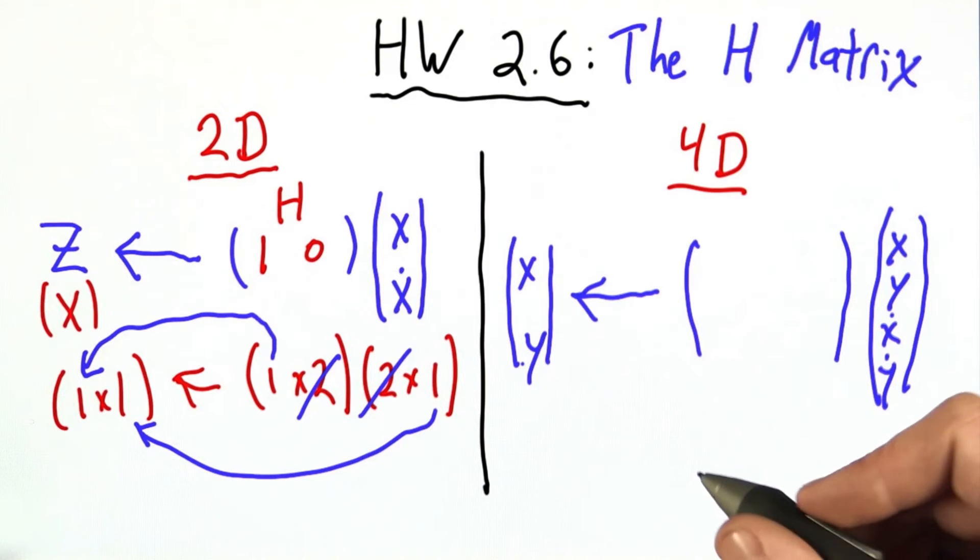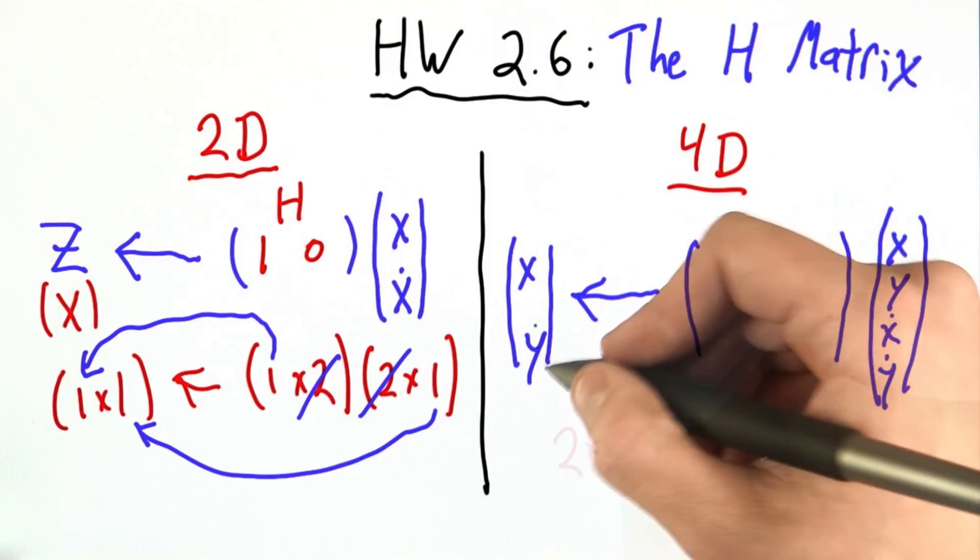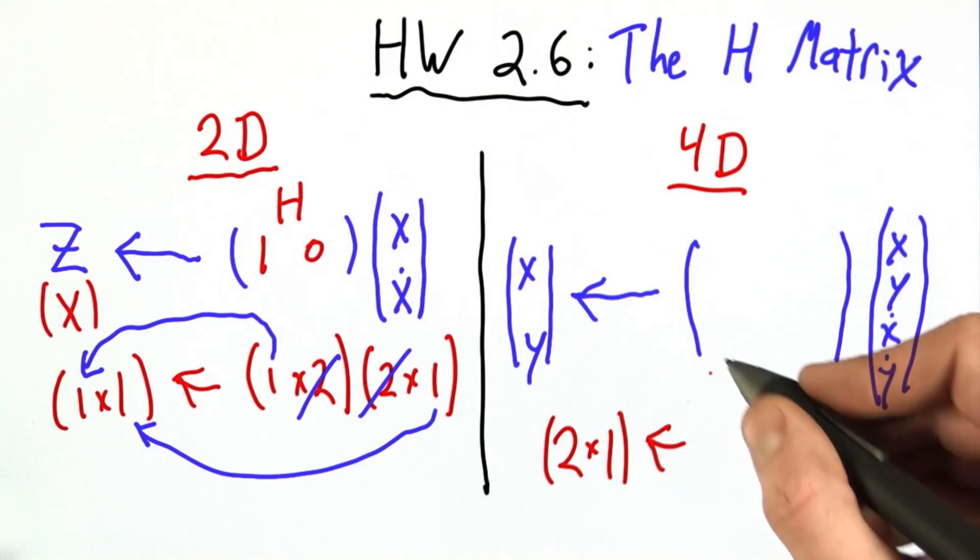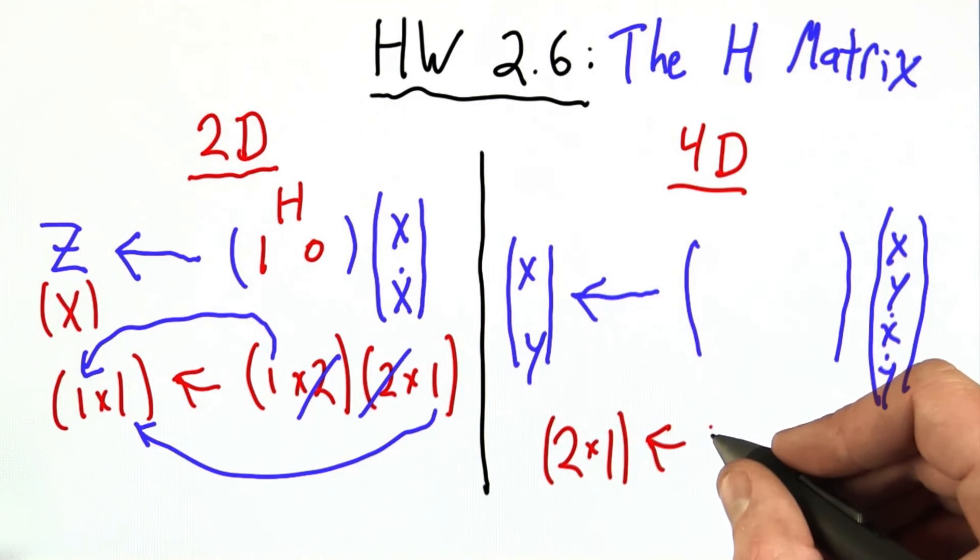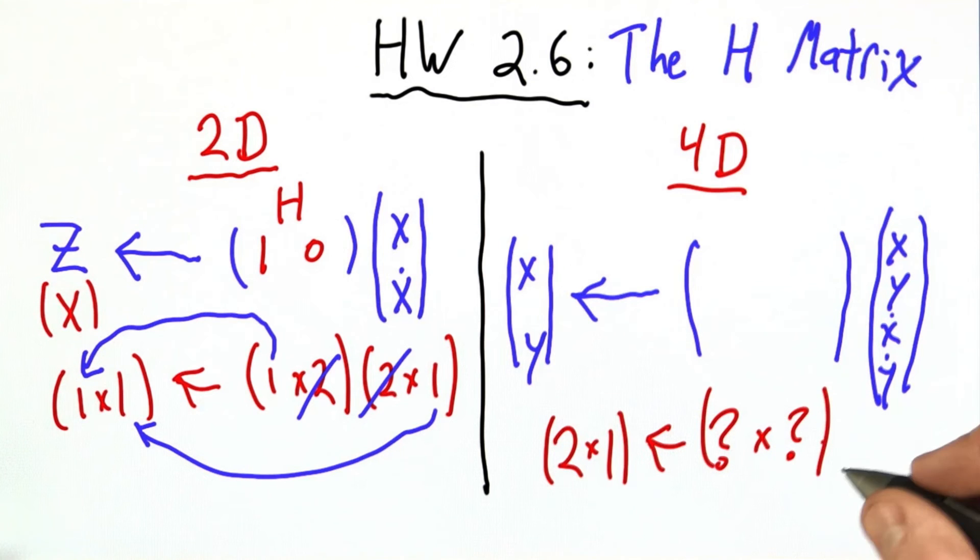Okay, so again, let's think. What's going on with the dimensionality here? Here we have a 2 by 1 matrix. And that came from this matrix, which I said we don't know anything about yet. So I'll just say question mark by question mark. And this matrix, which is 4 rows by 1 column.